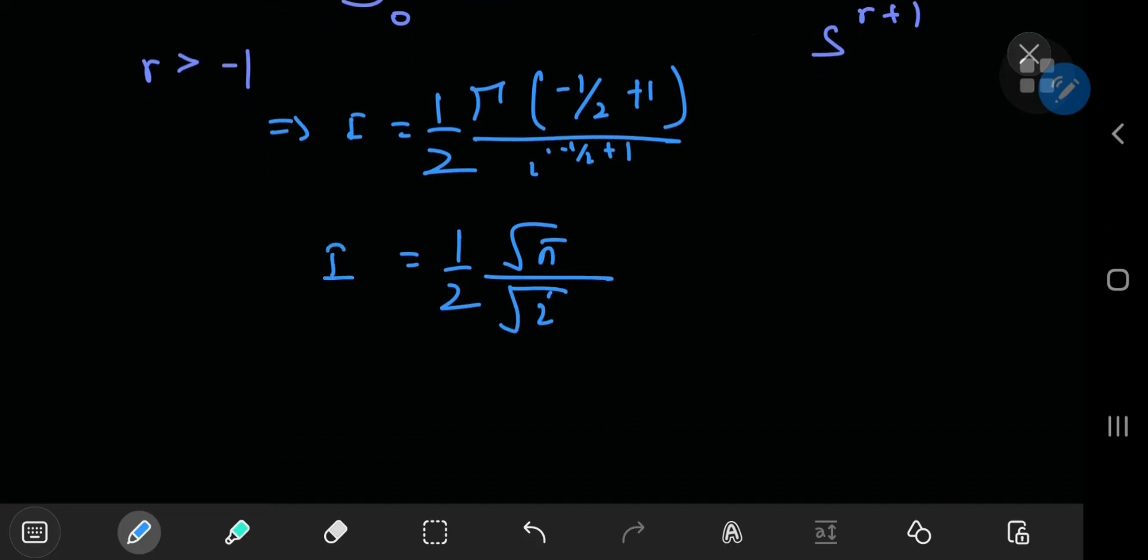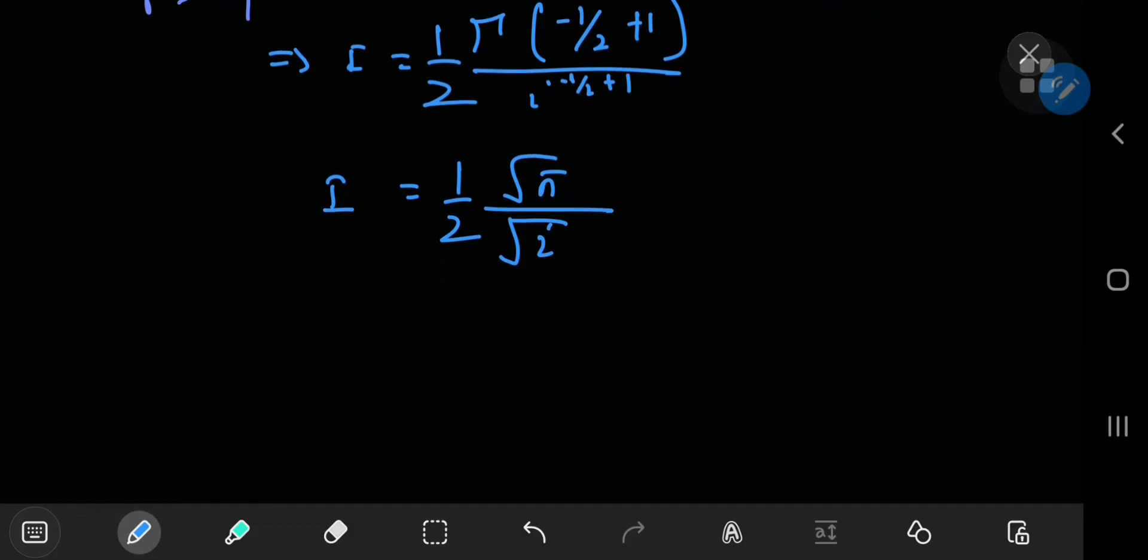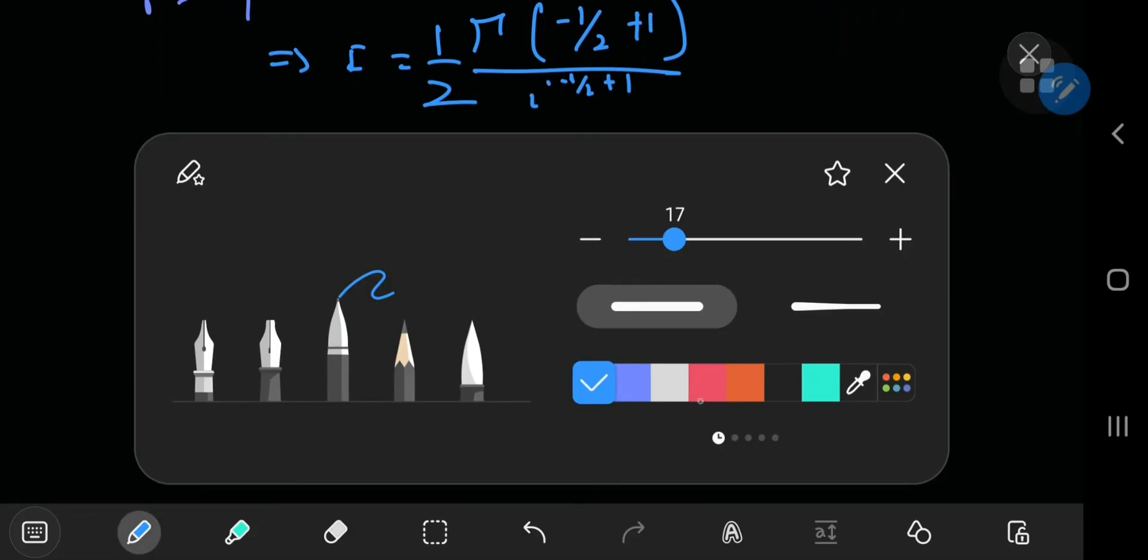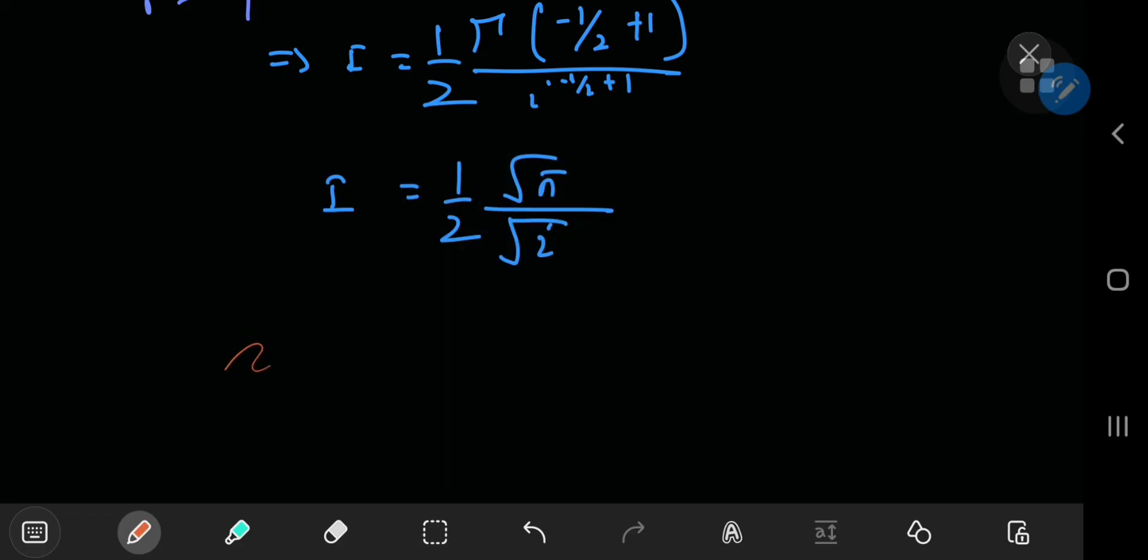Now, to separate this into real and imaginary parts, I'm going to need to figure out what the reciprocal of the square root of i is. So for that, we know that i is actually e^(iπ/2).